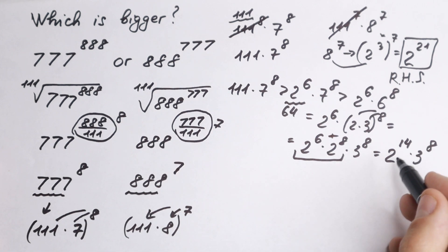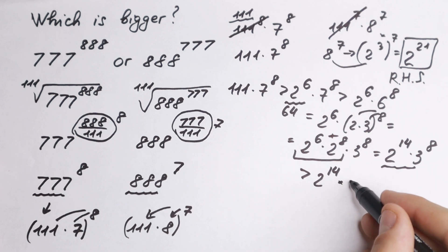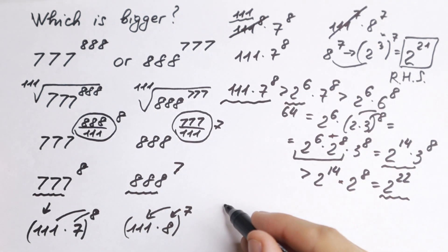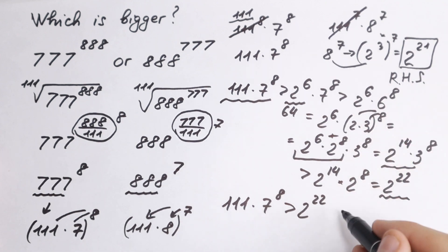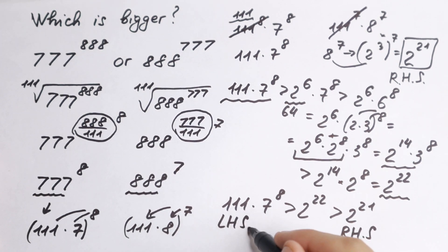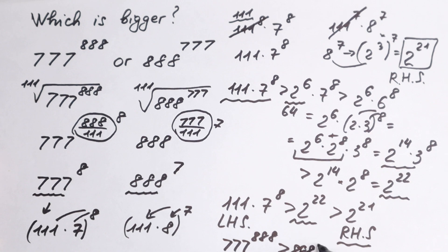This expression 2^14 × 3^8 is still greater than 2^14 × 2^8, since 3 > 2. And 2^14 × 2^8 = 2^22. So our chain gives us: 111 × 7^8 > 2^22 > 2^21. Since the left hand side exceeds 2^22 and the right hand side is only 2^21, the left hand side is greater. Therefore 777 to the power 888 is greater than 888 to the power 777.